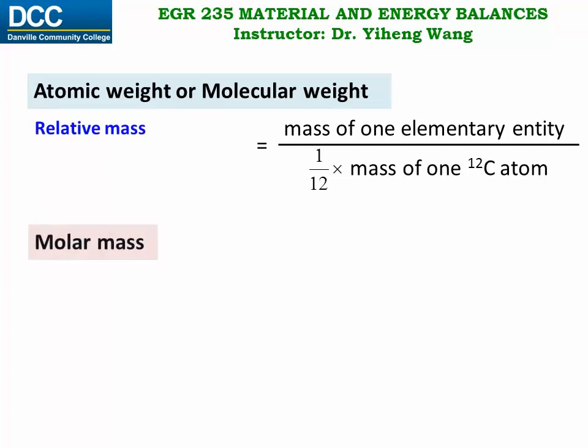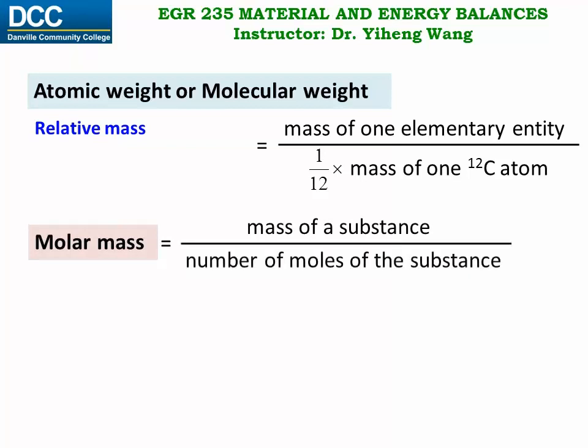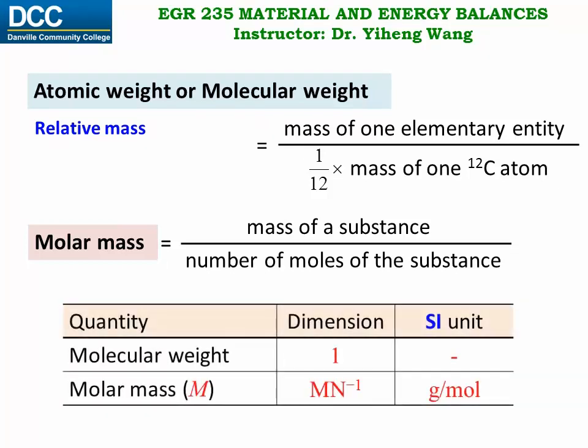Another quantity, molar mass, is defined as the mass of a substance divided by number of moles there are. Therefore, molecular weight and molar mass do not have the same dimensions. Molecular weight is dimensionless, unitless. Molar mass, however, has the dimension of mass over amount.